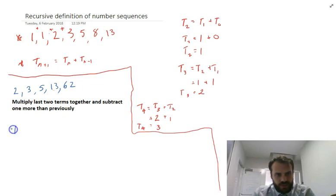So let's try this. It's going to be T_n+1. So the next term is going to be equal to T_n times T_n-1. And then we need to subtract something from that.